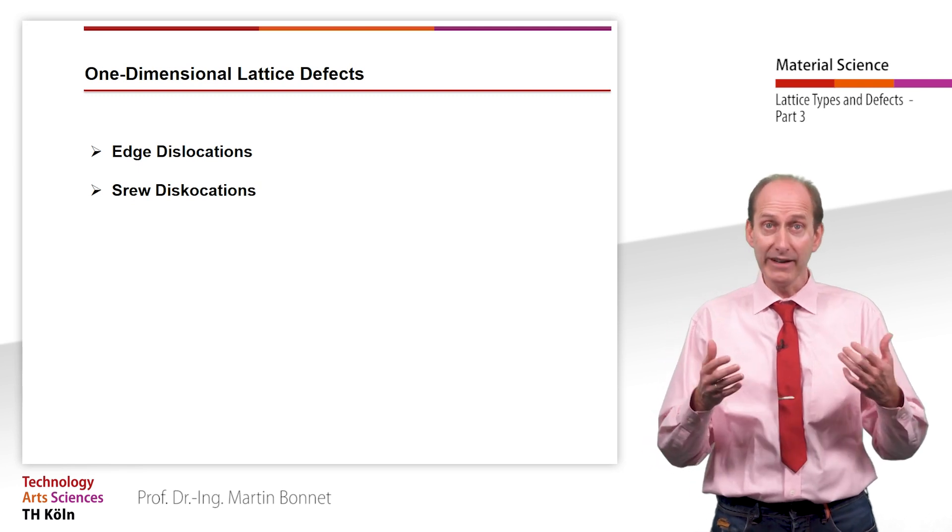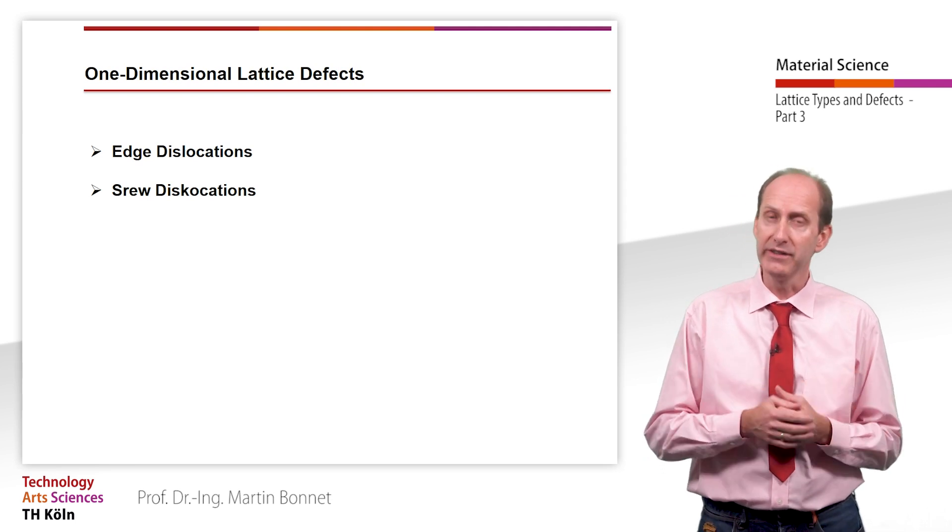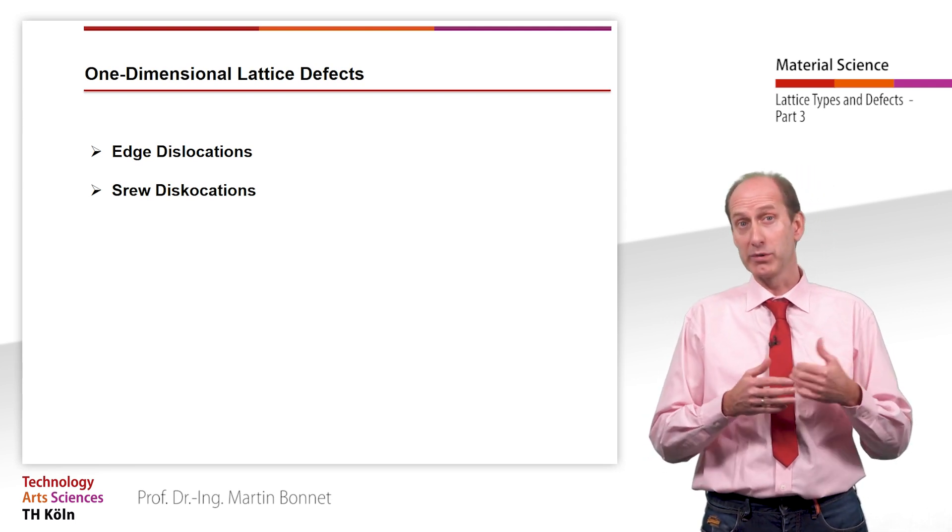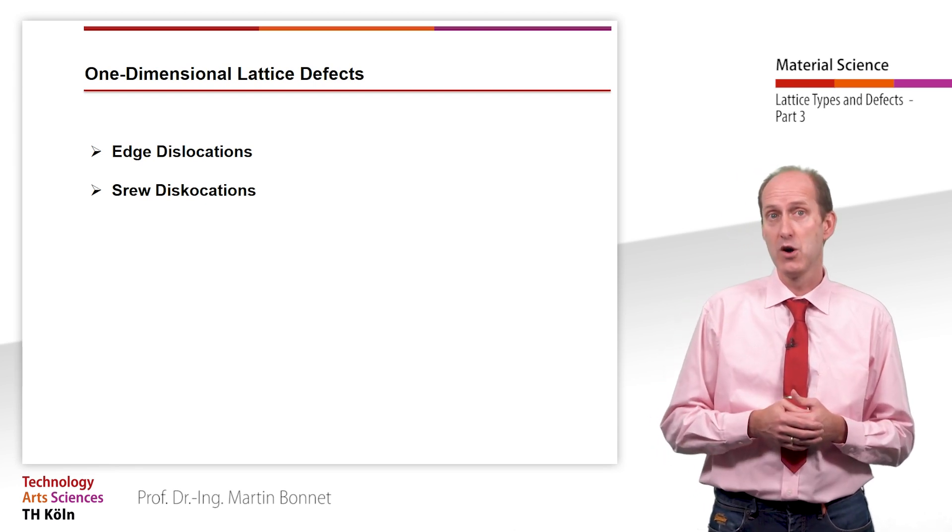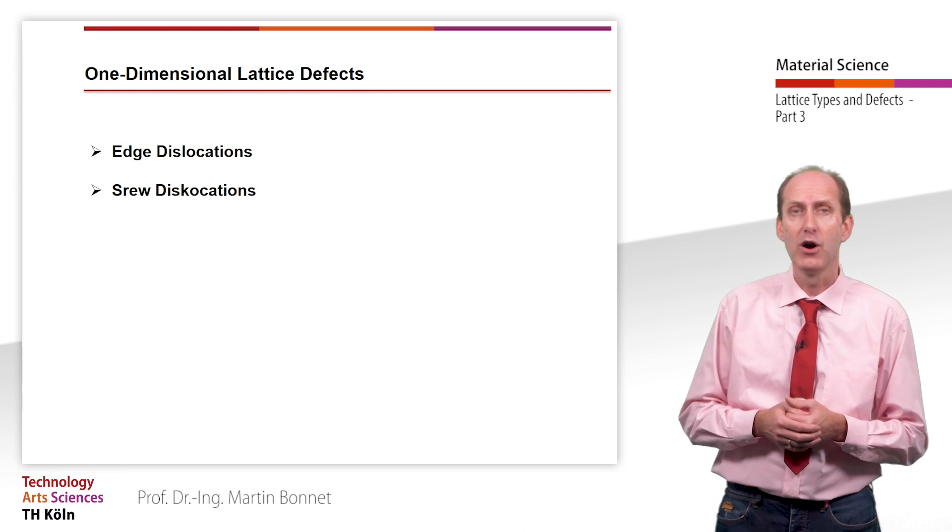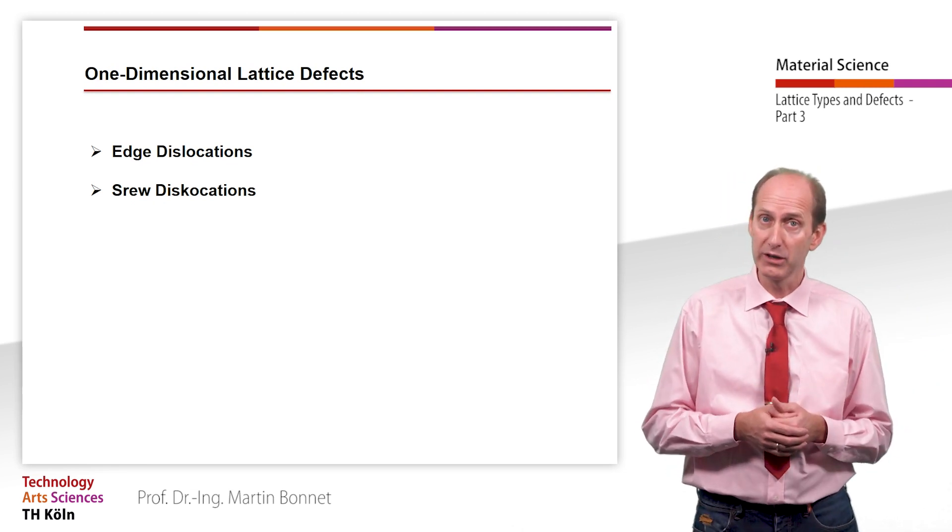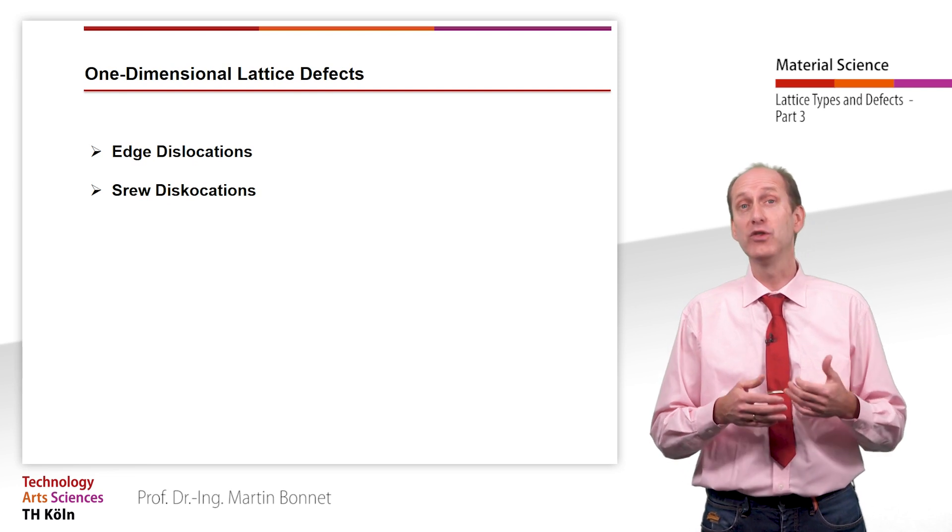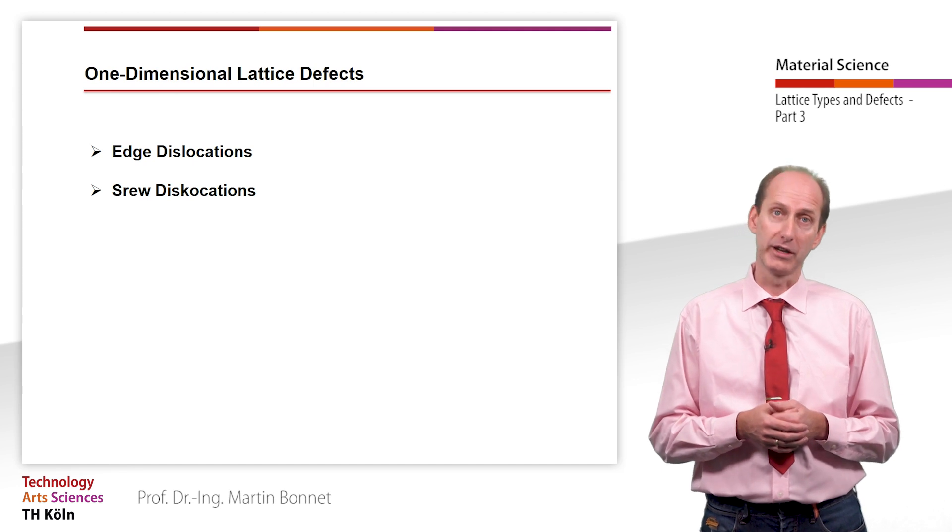The length of the dislocation lines per unit volume, which is the dislocation density, can be considerably increased through plastic deformation. Whereas the dislocation density of an undeformed metal lattice is about 1 km per cubic millimeter, it can be increased up to 10,000 km per cubic millimeter through cold working.